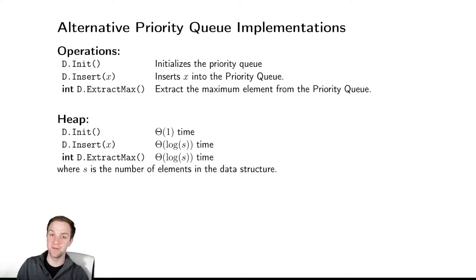Having discussed heaps in detail, we're going to go back to our original data structure, the priority queue, and assess how well it accomplishes its goal of implementing the methods. Our methods were insert and extract max, and the heap implementations both took log of s time where s was the number of elements in the data structure. It's pretty good.